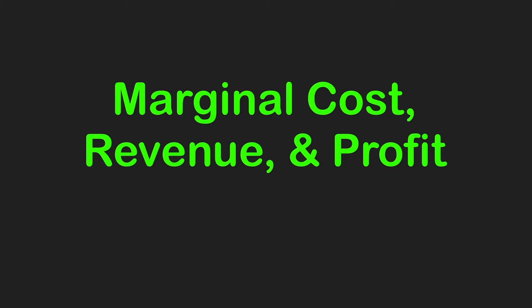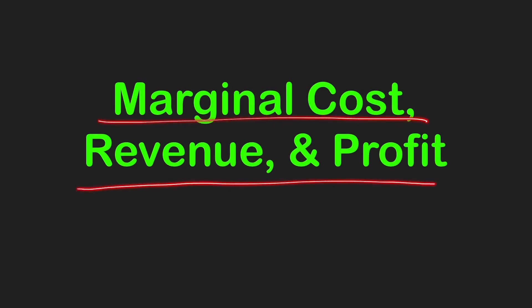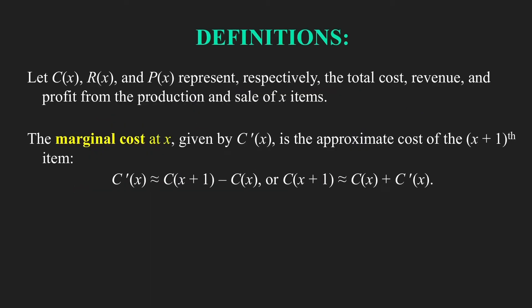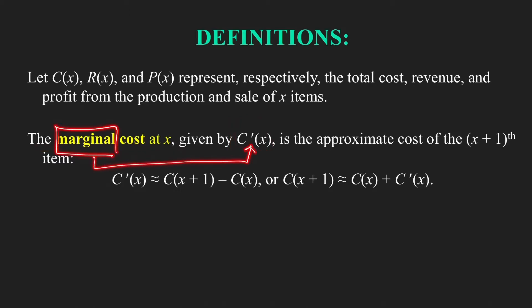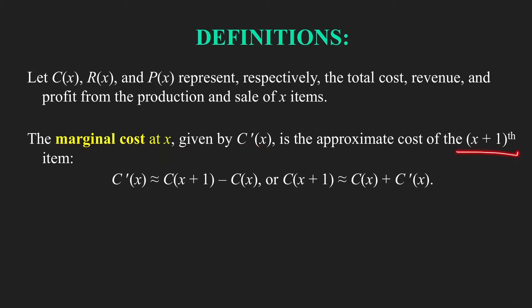In this video we're going to discuss an application of derivatives in business and economics — finding marginal cost, marginal revenue, and marginal profit. Let's first define these marginal functions. Suppose c(x), r(x), and p(x) represent the total cost, total revenue, and total profit from the production and sale of x items. The marginal cost at x is given by the derivative c'(x). We can think of 'marginal' as meaning 'derivative.' Marginal cost usually refers to the added cost brought by producing an additional item.